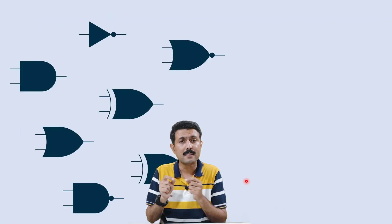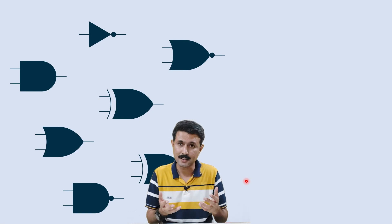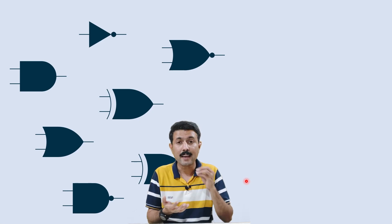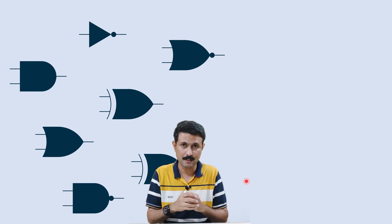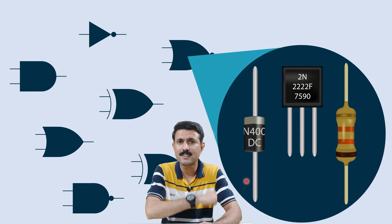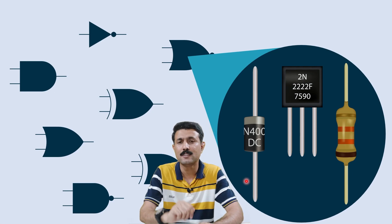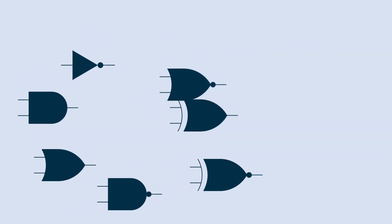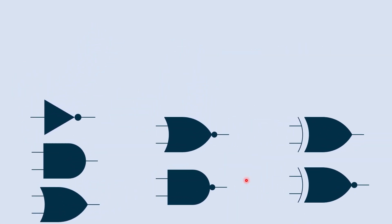Practically, these logic gates are nothing but electronic circuits, and they are constructed using semiconductor devices — devices like resistors, transistors, and diodes. Combining all these devices together, we can have varieties of gates.